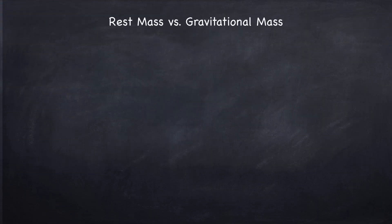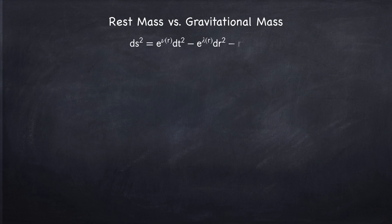To start off, let's review the difference between rest mass and gravitational mass. I covered this in Stellar Physics 3C when I derived the TOV equation, so I'm just going to review it briefly. We've assumed a spherically symmetric and static geometry, so we have a Schwarzschild-type metric, where the functions e^ν and e^λ in the metric are only functions of r, the radial position.